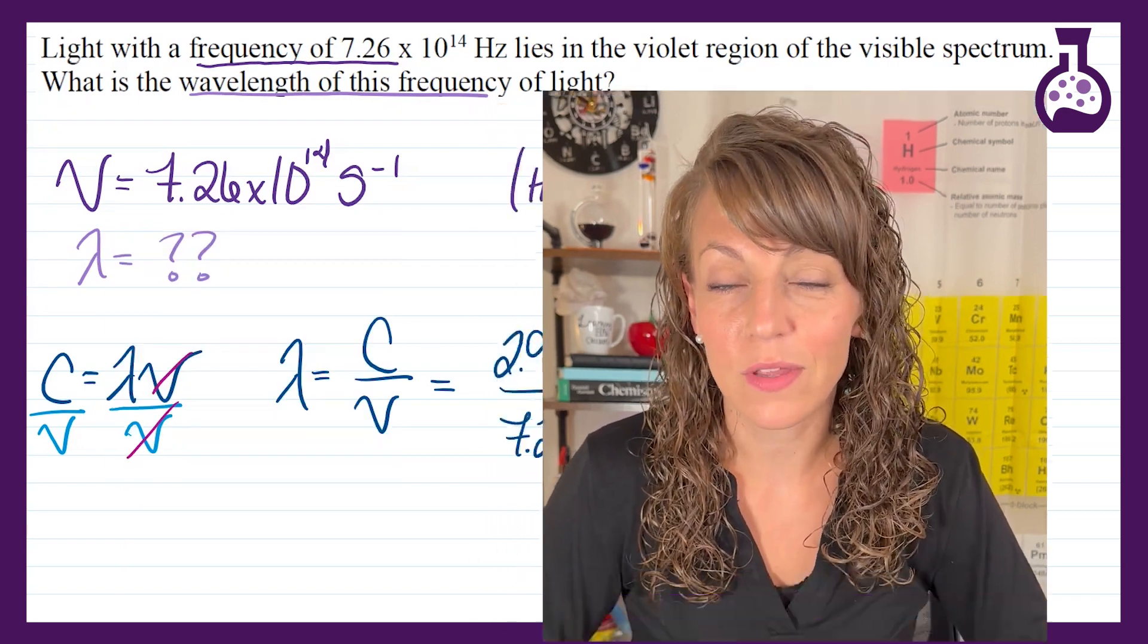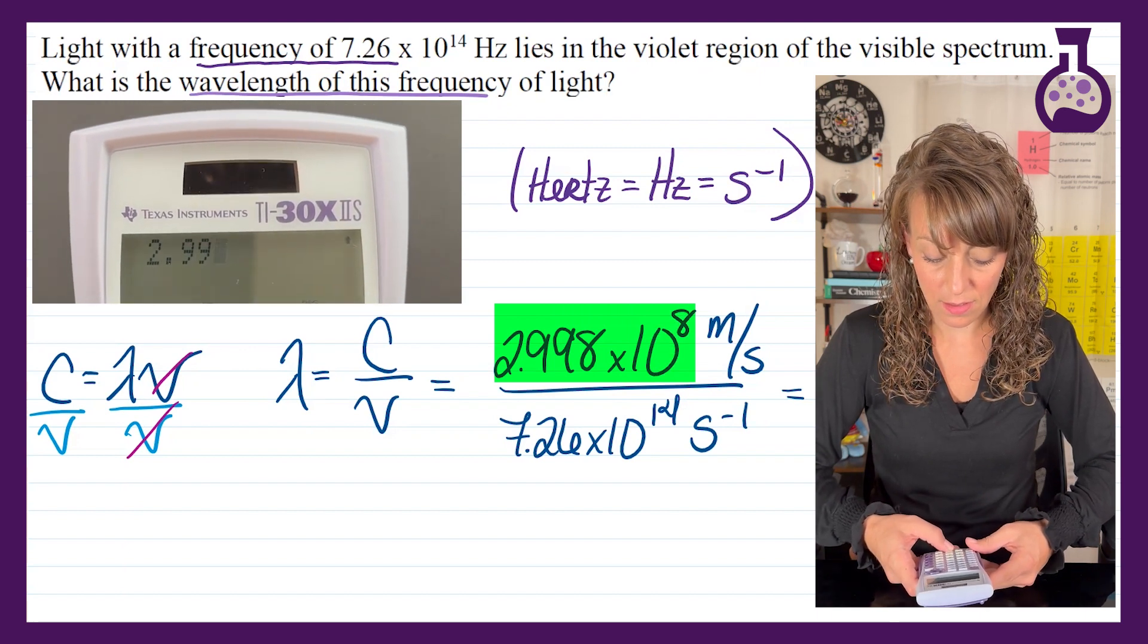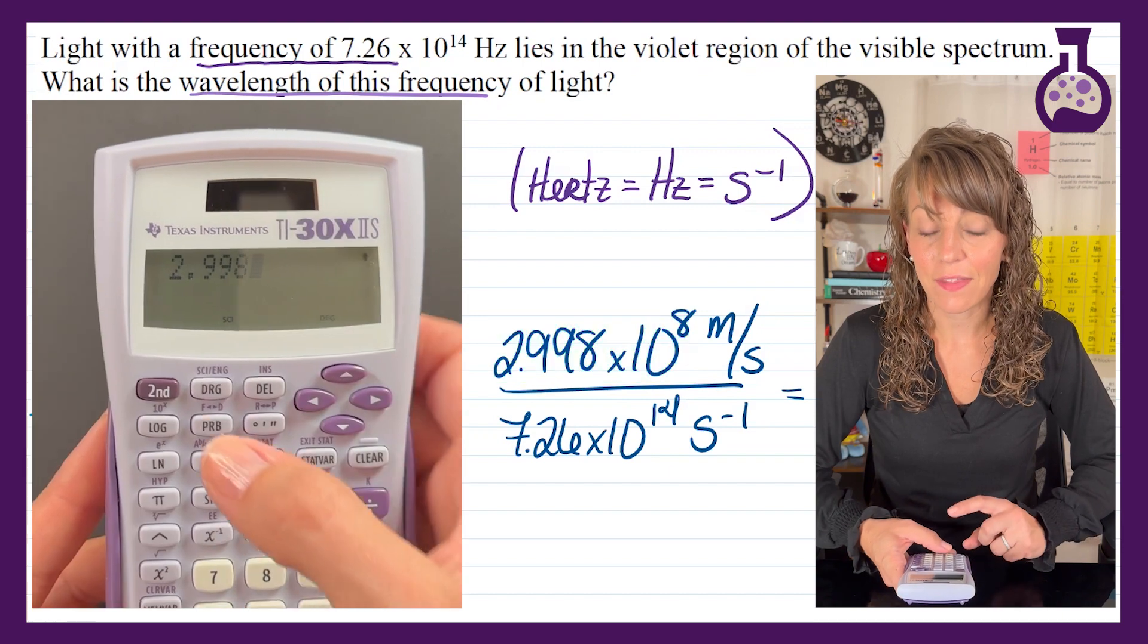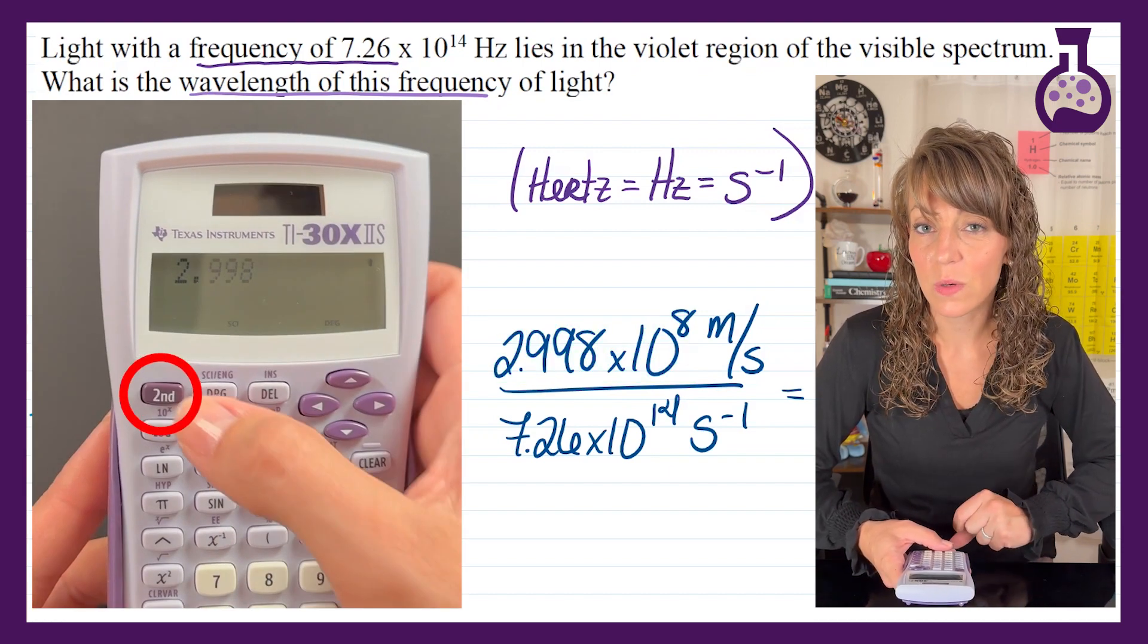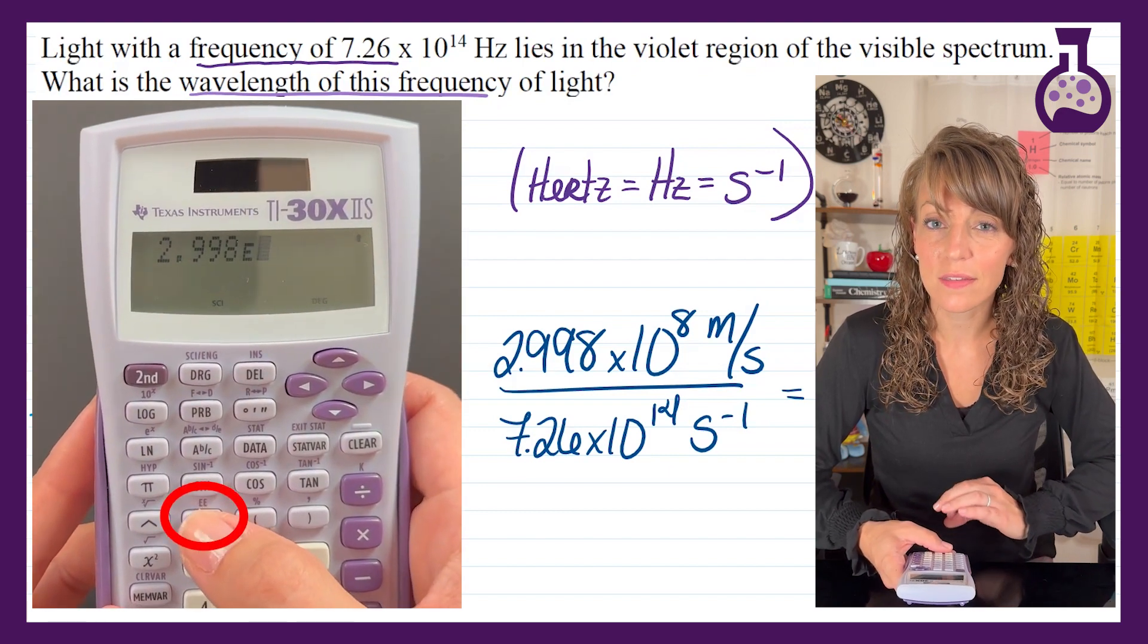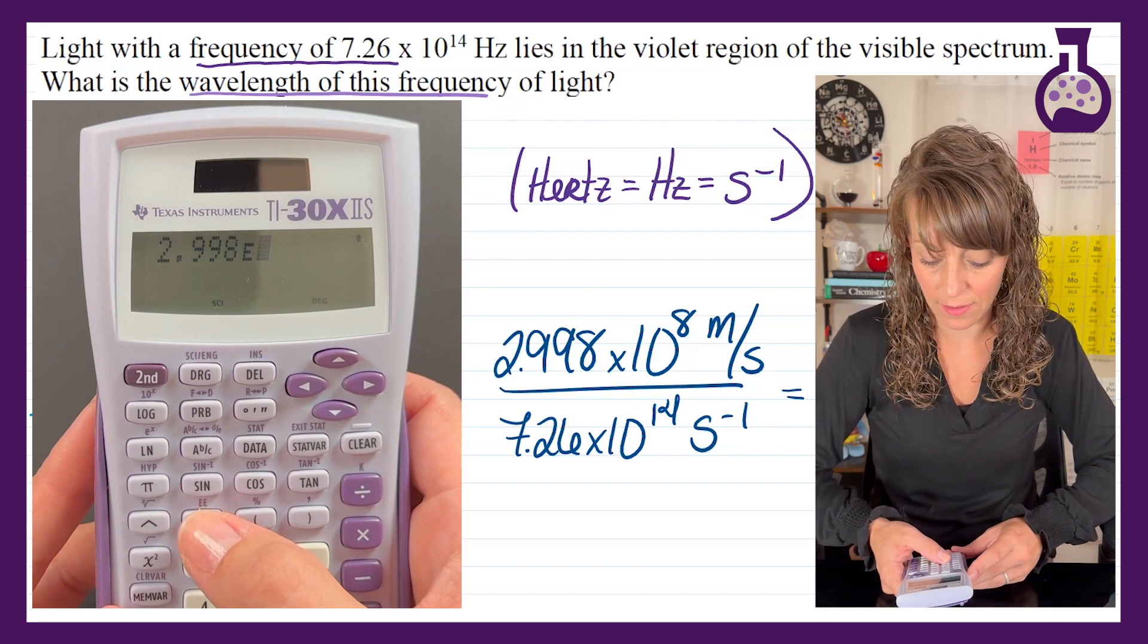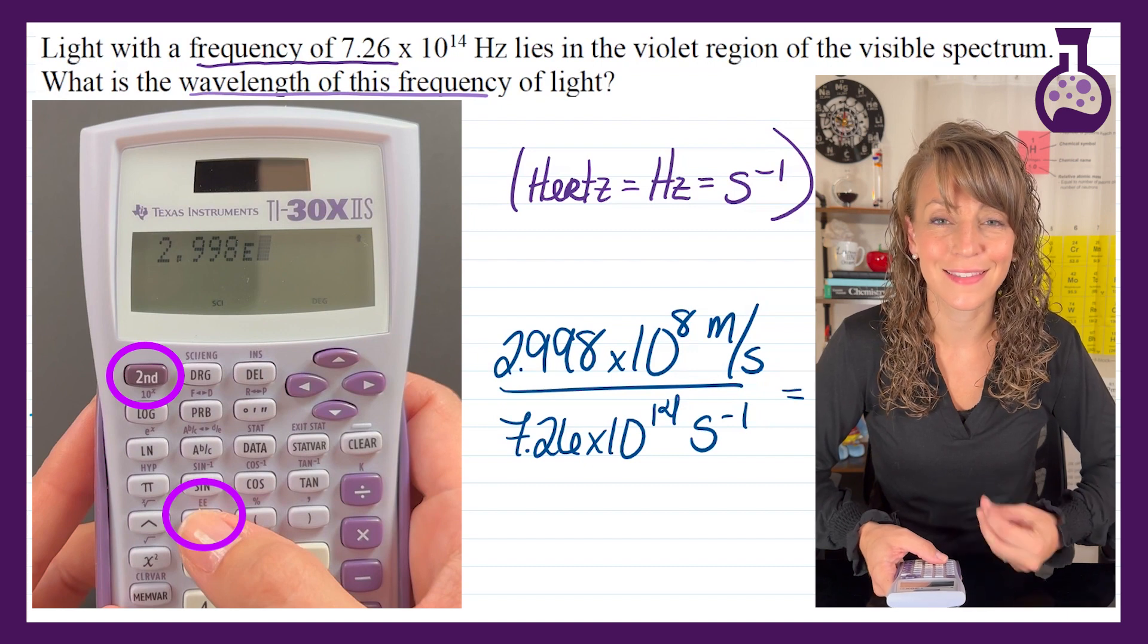So we're going to start with our speed of light and enter 2.998 into our calculator. And then we're going to hit the second button up in the top left hand corner. And then we're going to hit the double E button which is just above the number 7 on this particular calculator. And the double E is the same color as the second button.